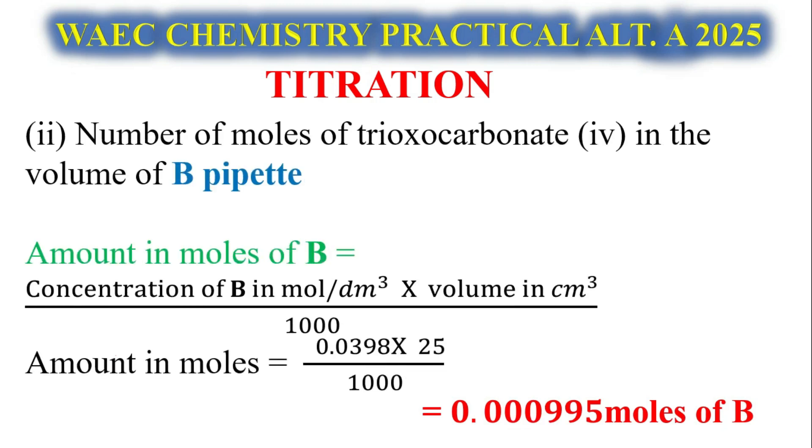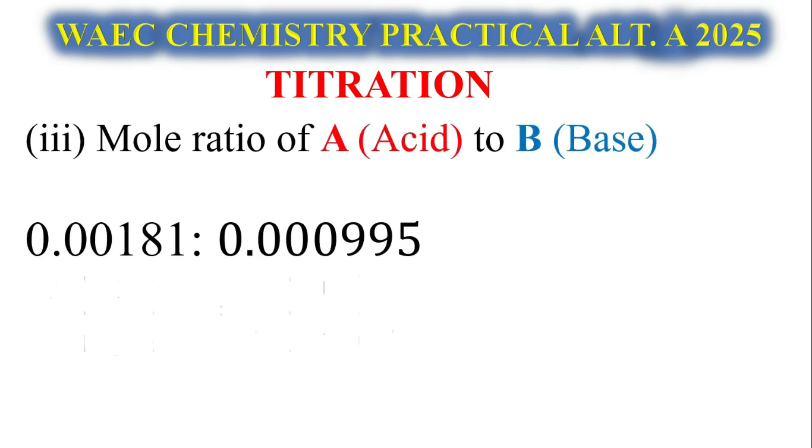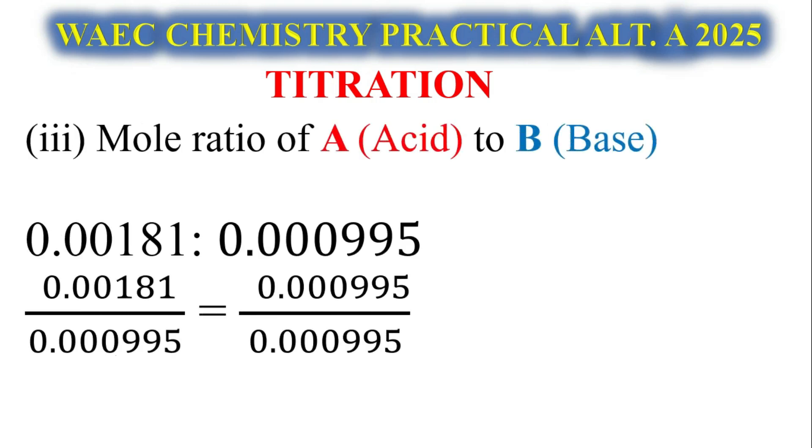In B, we're going to use N = CV/1000. For the base, we have 25 cm³ and the value given, so we have 0.000995 moles of B. To calculate the mole ratio of acid to base, this is the mole of acid, this is the mole of base. Divide by the smallest, 0.000995 is the smallest. When we do that, we get 2 ratio 1. It means the acid that has reacted with the base, when you balance the chemical equation, we have 2 ratio 1 as your number of moles of acid is 2, number of moles of base is 1.